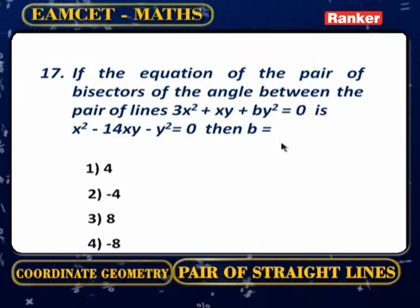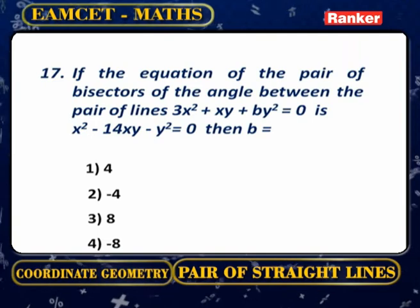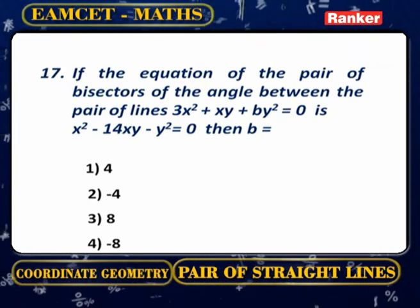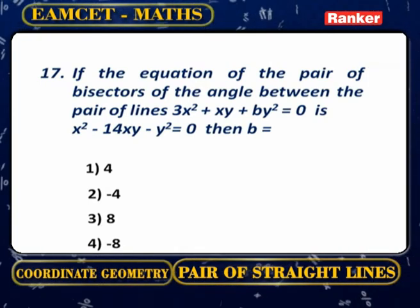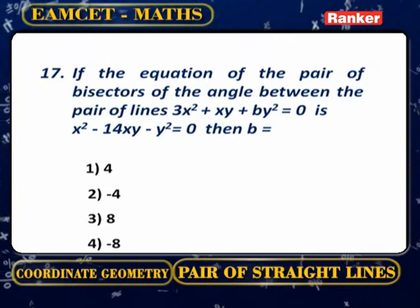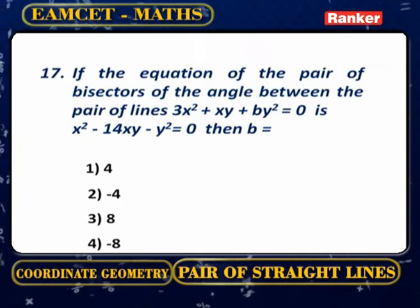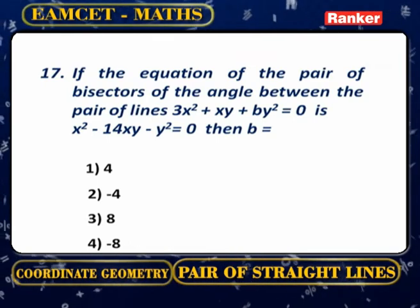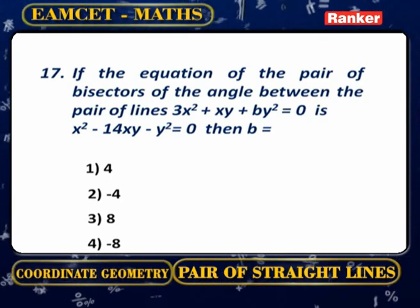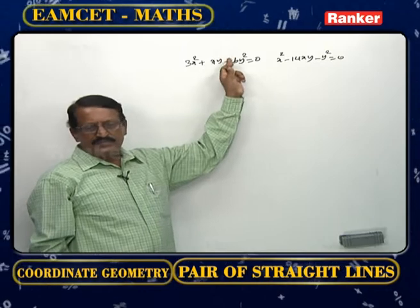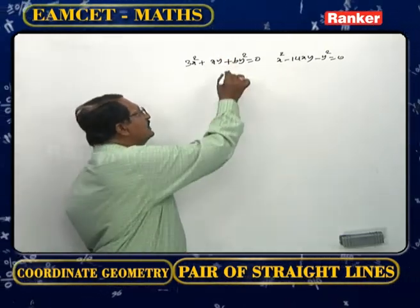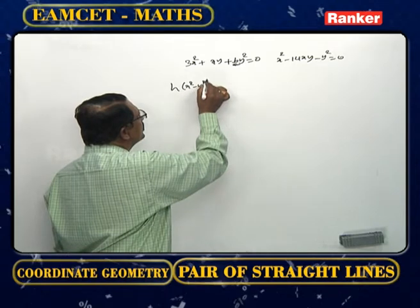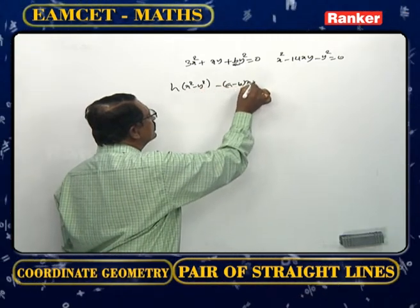The pair of bisectors of the angle between the pair of lines 3x² + xy + by² = 0 is x² − 14xy − y² = 0. Then b equals? The equation of the pair of angle bisectors of the first pair of lines is given as the second equation.